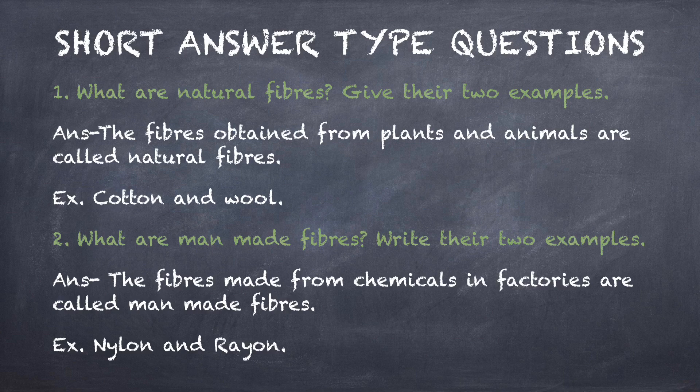Question number two: what are man-made fibers? Write their two examples. The fibers made from chemicals in a factory are called man-made fibers. Examples are nylon and rayon.